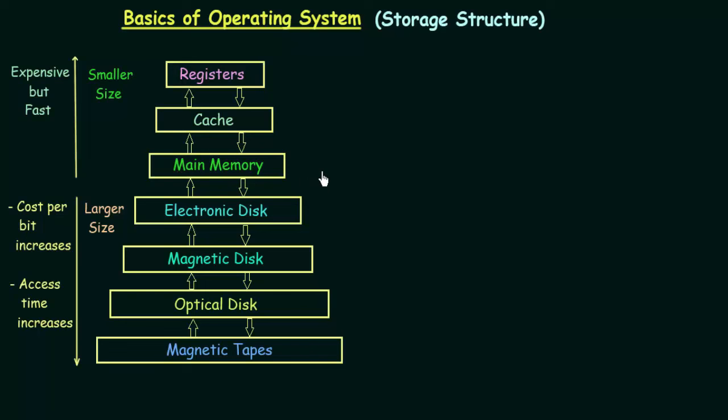For example, let's say you have your word processing software, Microsoft Word. It is installed in your secondary memory and resides there, but when you double-click and open it, it gets loaded to the main memory because you are going to perform some task in it. All your data resides in secondary memory and is loaded to main memory at the time of execution.